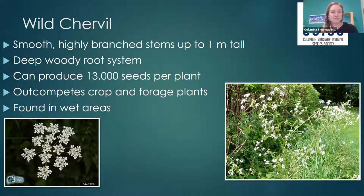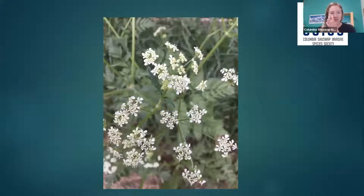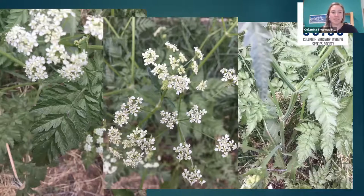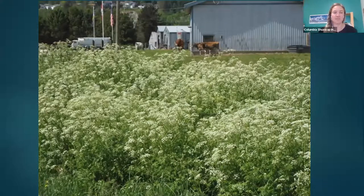The next plant is wild shirvel. It has smooth, highly branched stems up to one meter tall and a really deep woody root system. It's a prolific seed producer, producing 13,000 seeds per plant. It outcompetes crop and forage plants, making it a big problem in agriculture. It's often found in wet areas where it competes for water and nutrients. When mature it can form tall stands of vegetation that are unpalatable to livestock and wildlife.